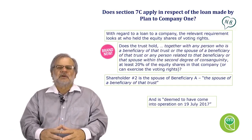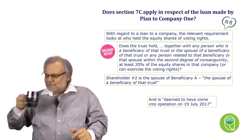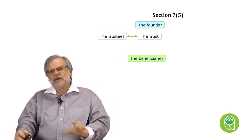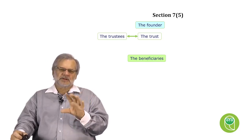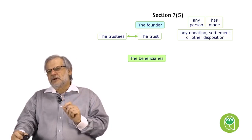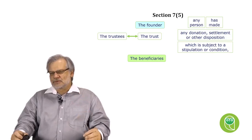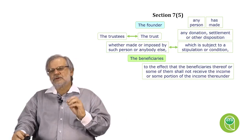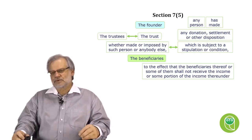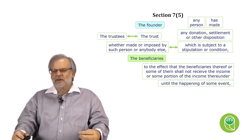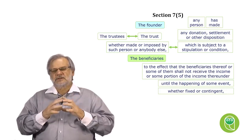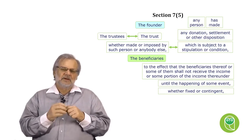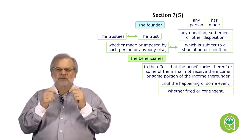The next problem is the deeming provisions of Section 7. Section 7.5 is the most common one. Section 7.3 deals with minor children, which most practitioners know. In Section 7.5, we've got the parties to the trust: the founder, the trust, the beneficiaries. Section 7.5 says where any person has made a donation, settlement, or other disposition subject to a stipulation or condition — made by the donor or any other person — that the beneficiaries shall not receive the income until the happening of some event, whether fixed or contingent. There is consensus that a discretionary trust, where income is subject to trustees exercising their discretion to vest it in beneficiaries who have no vested rights, is caught by Section 7.5.